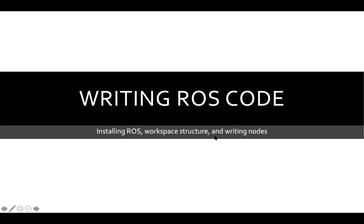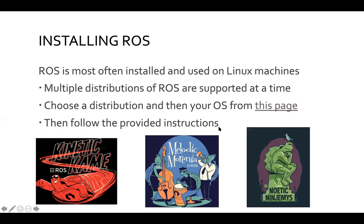Let's look at how we actually implement these things, and in what language. To install ROS, you typically use Linux — the standard operating system for robotic software development. Multiple distributions of ROS are supported at one time. You go to the installation page and choose your distribution and OS, then follow the provided instructions.